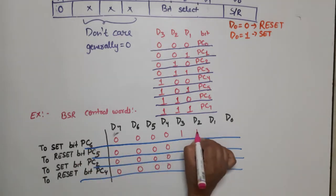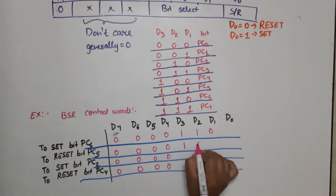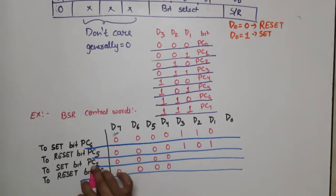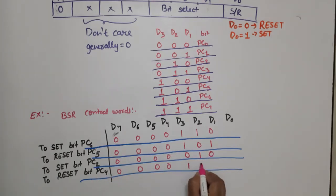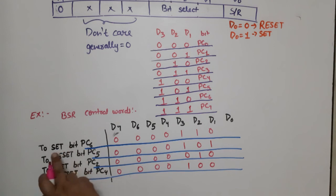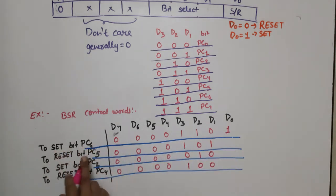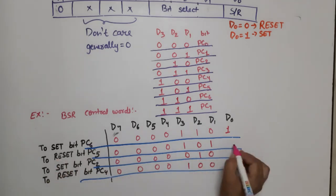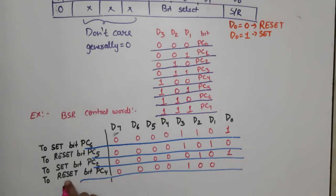For PC6, the D3 D2 D1 bit-select value is 1 1 0. For PC5, it is 1 0 1. For PC2, it is 0 1 0. For PC4, it is 1 0 0. To set PC6, D0 = 1. To reset PC5, D0 = 0. To set PC2, D0 = 1. To reset PC4, D0 = 0.